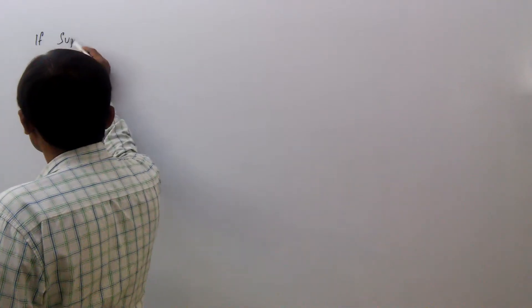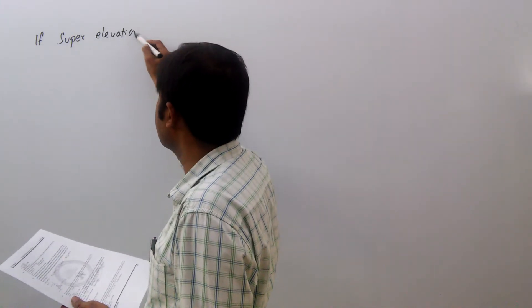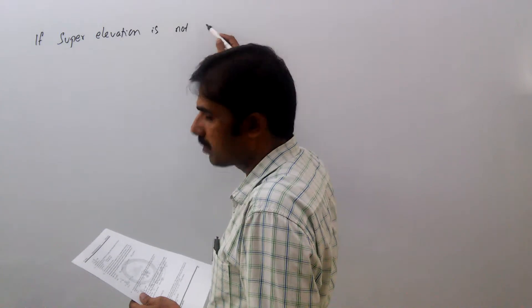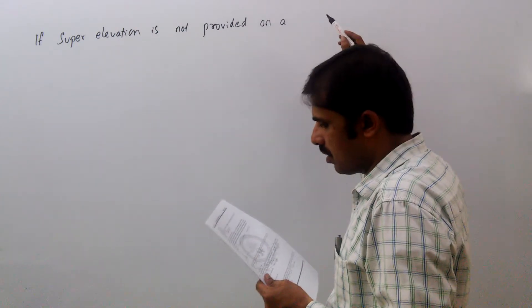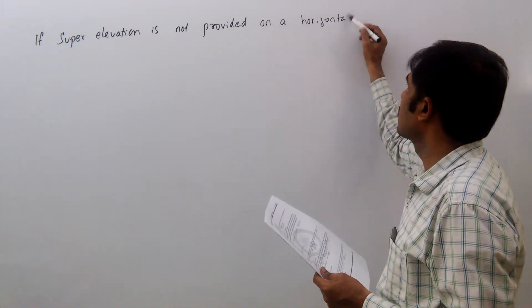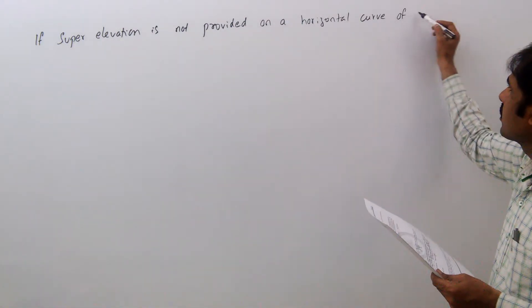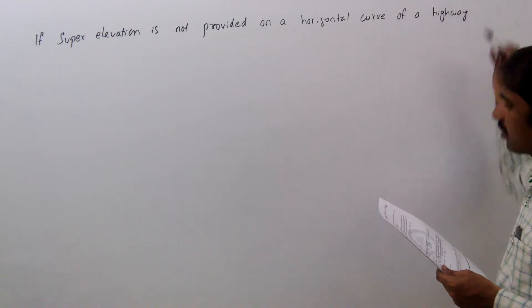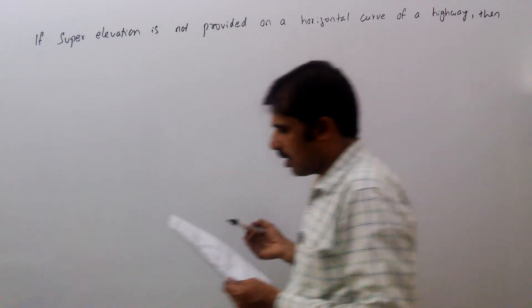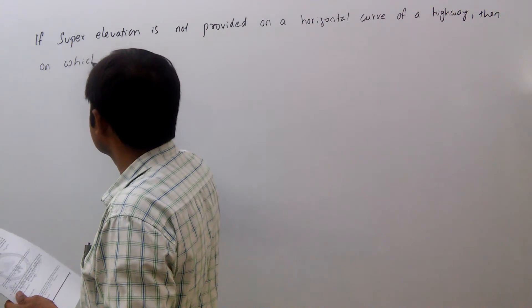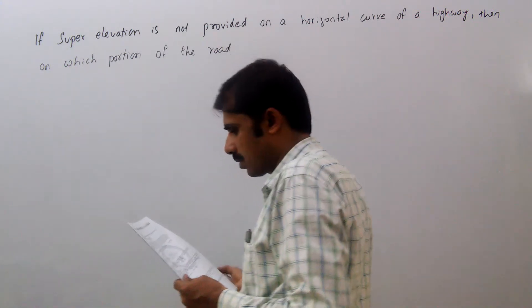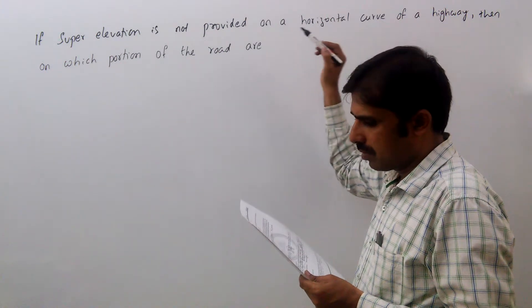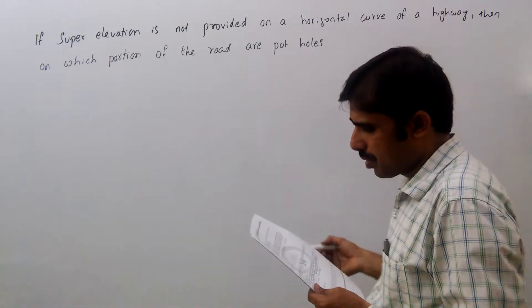If super elevation is not provided on a horizontal curve of a highway, then on which portion of the road are pot holes likely to develop?